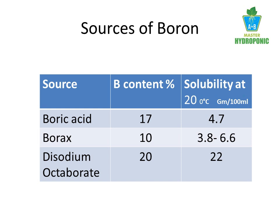Boron can be supplied to plants using boric acid, borax, or disodium octoborate. I personally use disodium octoborate, as boric acid and borax have very low solubility in water. Solubility affects the availability of boron. Boron micronutrient fertilizer is added to the B solution of hydroponics.